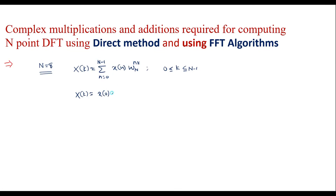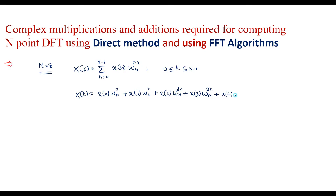For n equal to 0, it will be x(0) times W_N power 0. For n equal to 1, it will be x(1) times W_N power k. For n equal to 2, it will be x(2) W_N power 2k, plus x(3) W_N power 3k, plus x(4) W_N power 4k, plus x(5) W_N power 5k, plus x(6) W_N power 6k, plus x(7) W_N power 7k.